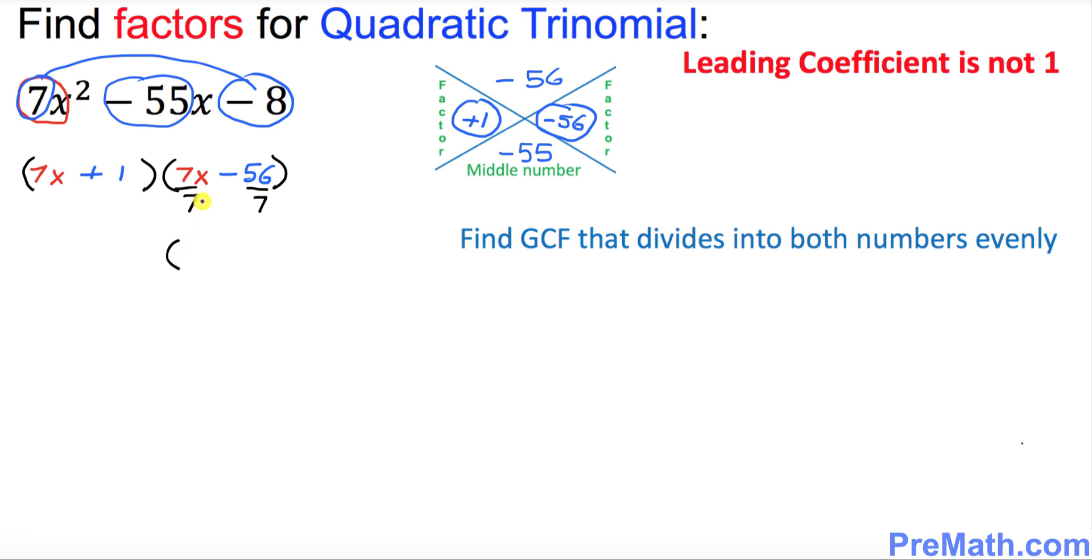So the second parentheses is going to be when you simplify, that's going to become x minus 8, and leave the first parentheses as it is, 7x plus 1. So thus 7x plus 1 and x minus 8 are our factors.